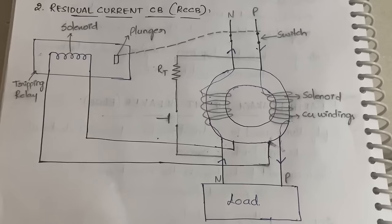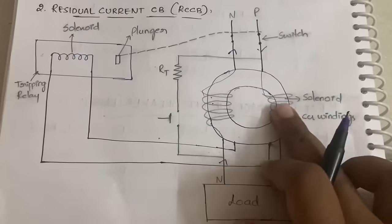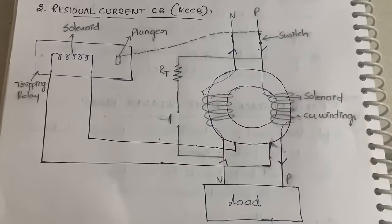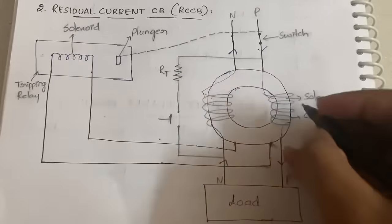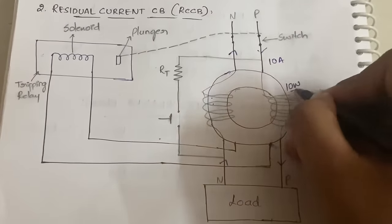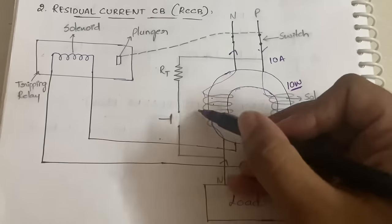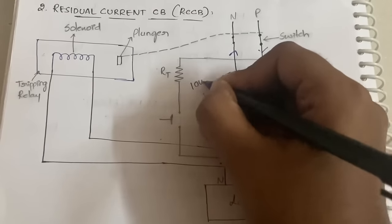Before discussing abnormal condition, one important thing: whenever current is passed through the copper windings — copper being a metal — a magnetic field is generated. That magnetic field is directly proportional to the amount of current. Suppose 10 amperes is coming through the phase wire; then 10 webers of magnetic field will be generated here, and the same 10 webers will be generated on the return side.